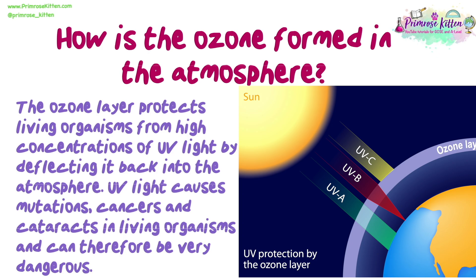The ozone layer protects living organisms from high concentrations of UV light by deflecting it back into the atmosphere. UV light causes mutations, cancers, and cataracts in living organisms and can therefore be very dangerous.